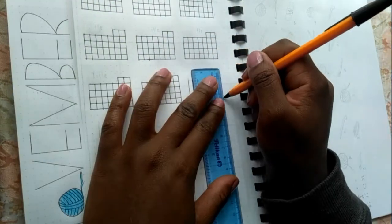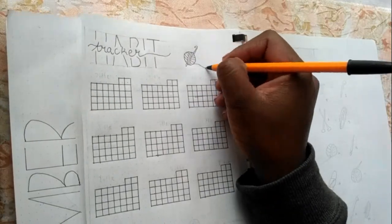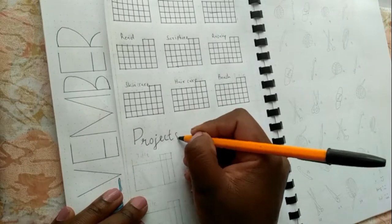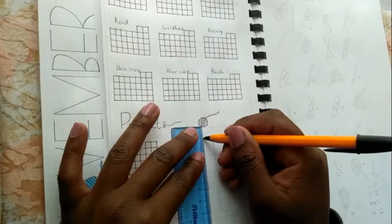November starts on a Friday then ends on a Saturday and it is five weeks, so it's pretty easy to come up with that. Then I'm going to have my personal habits that I want to build on and then my two projects that I want to work on.